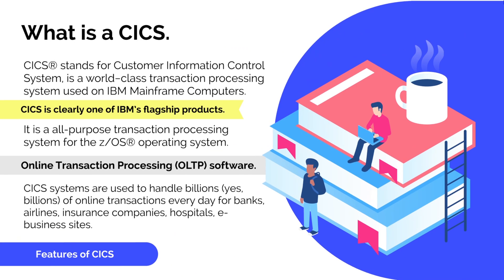What is CICS? The term CICS stands for Customer Information Control System. It is a world class online transaction processing system used on IBM mainframes and other computing platforms. CICS is a middleware designed to support rapid, high volume, online transaction processing. CICS systems are used to handle billions of online transactions every second, every day for banks, airline industries, insurance companies, hospitals, retail stores and e-business sites.